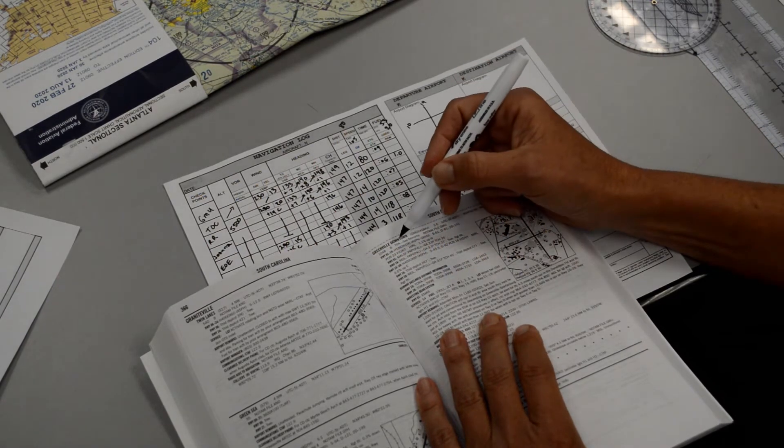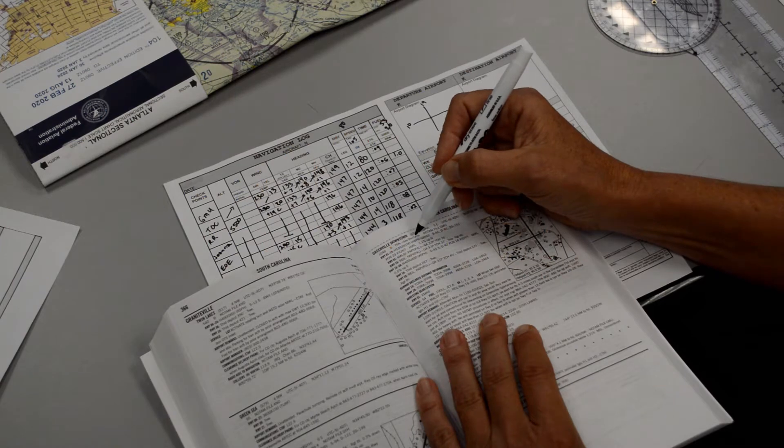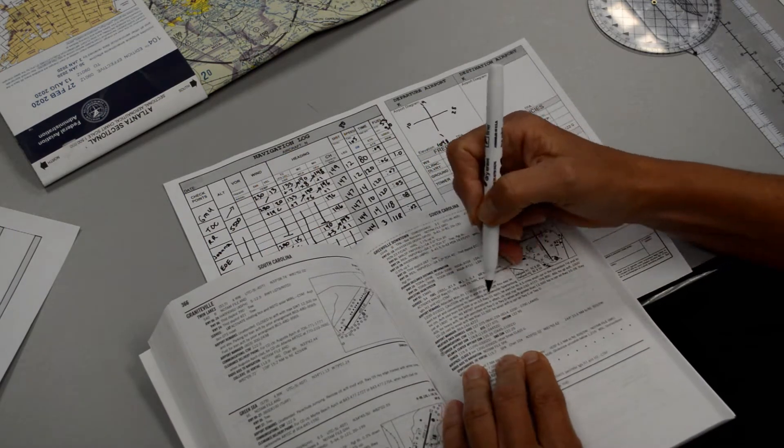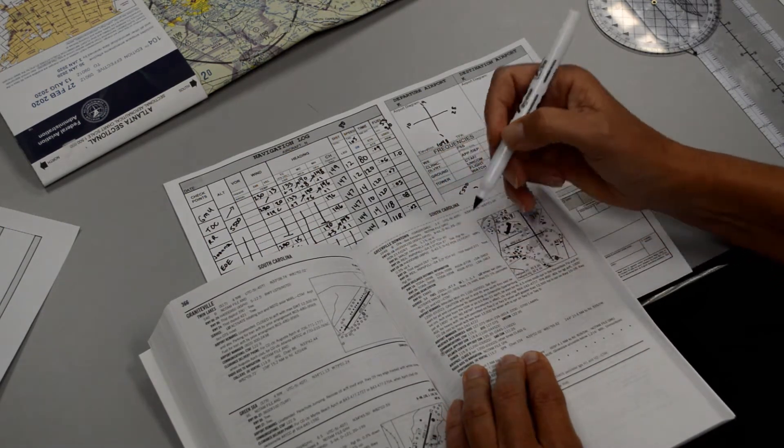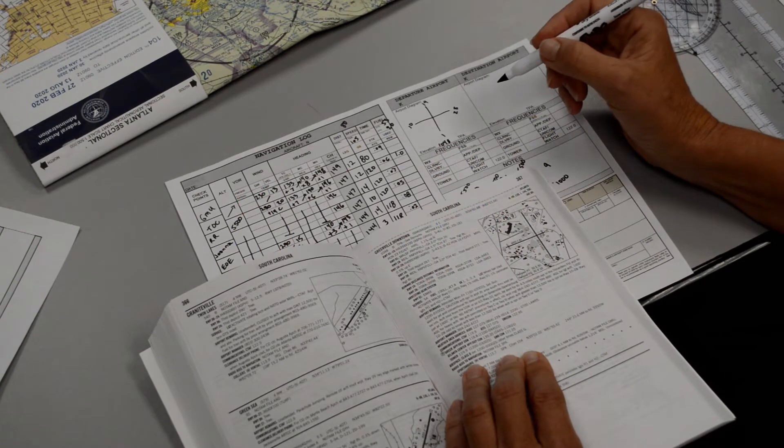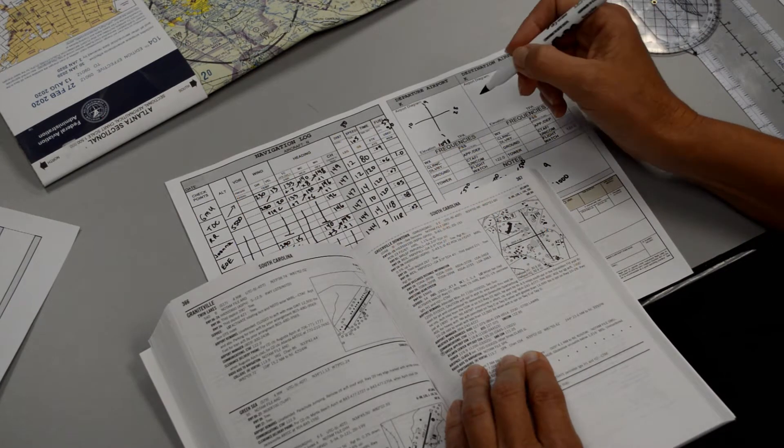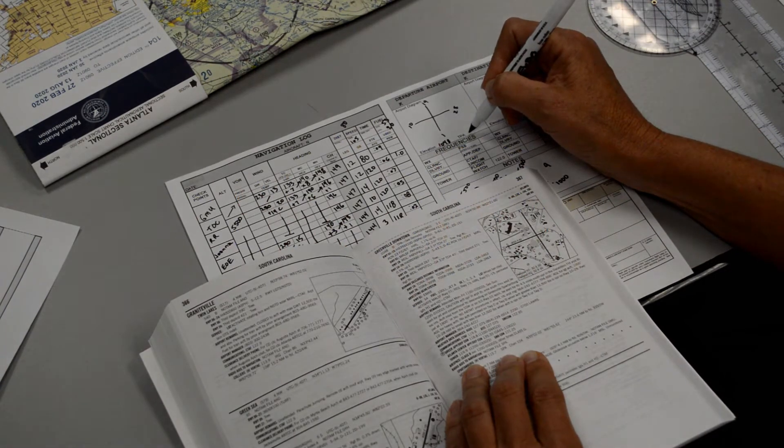Traffic pattern altitude, there's a note in here that says traffic pattern altitude, see remarks. And down here, if we read through this, it's going to show us that it's actually an 800-foot pattern instead of a 1000-foot pattern. So traffic pattern altitude is going to be 1800.